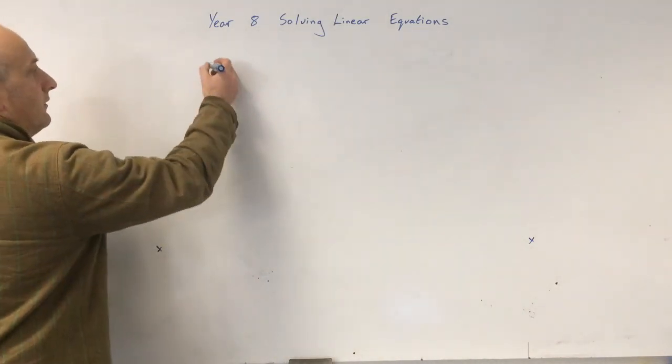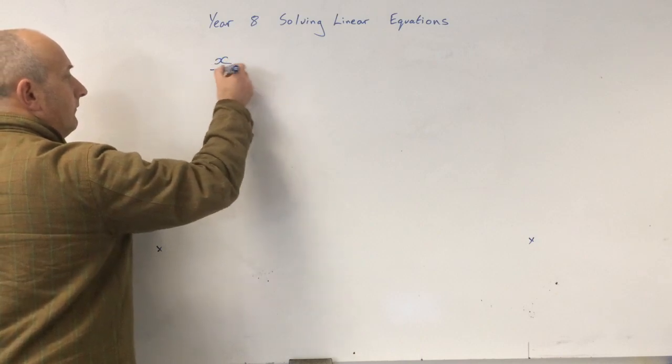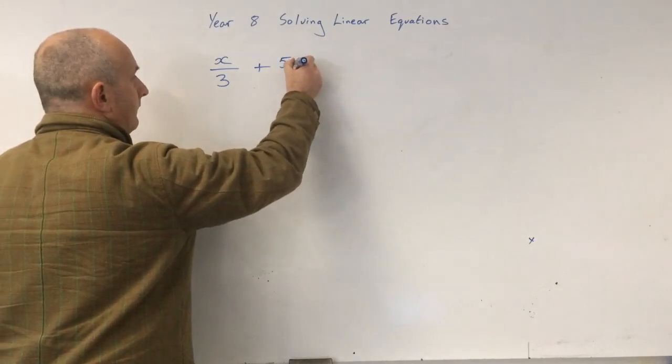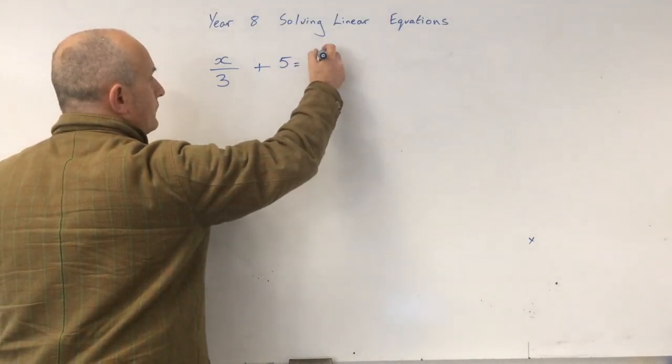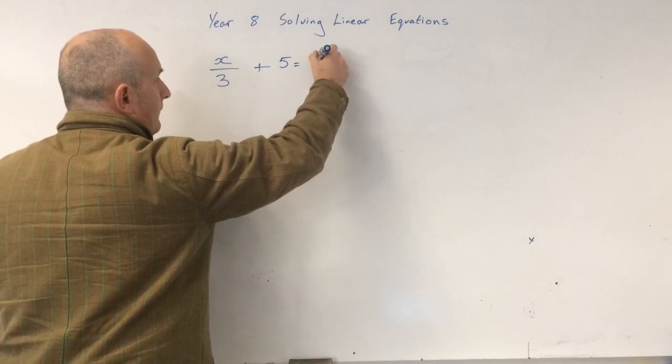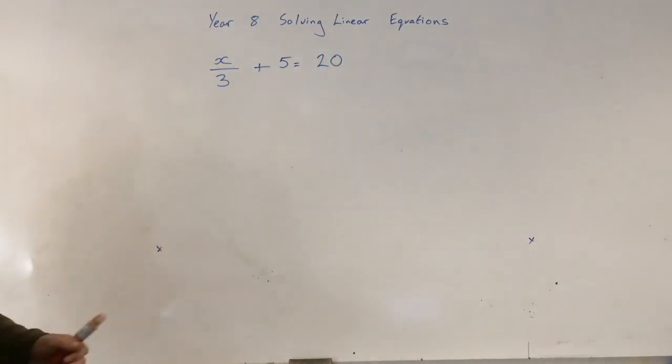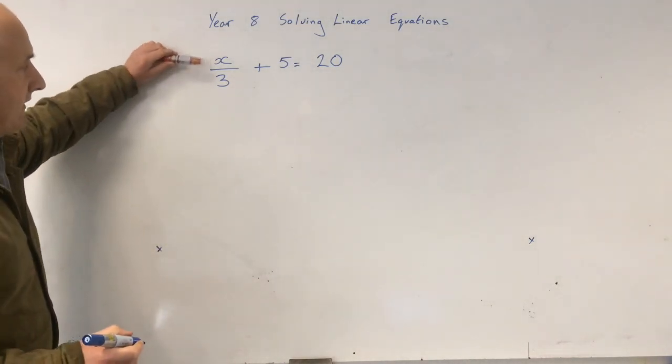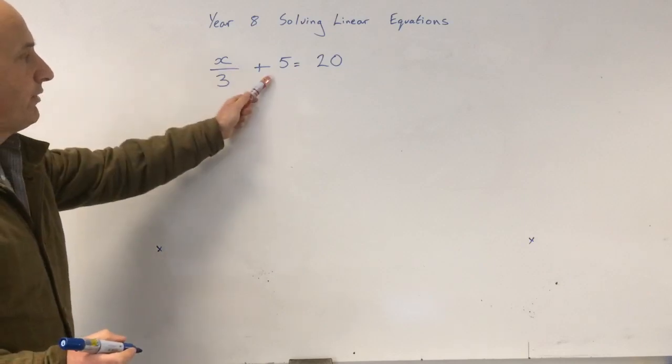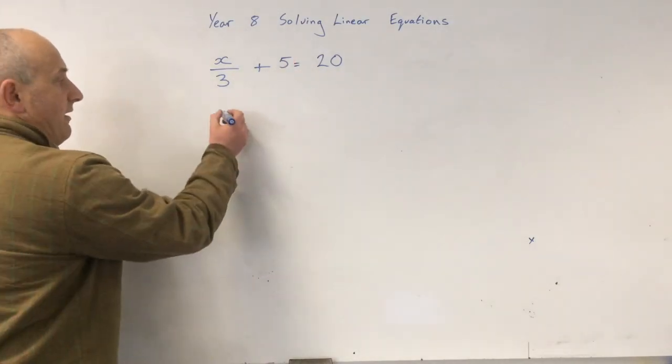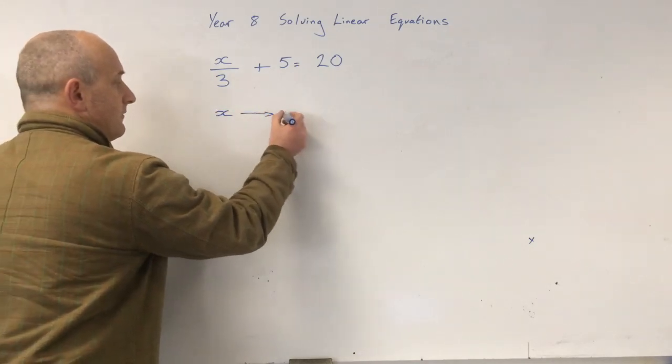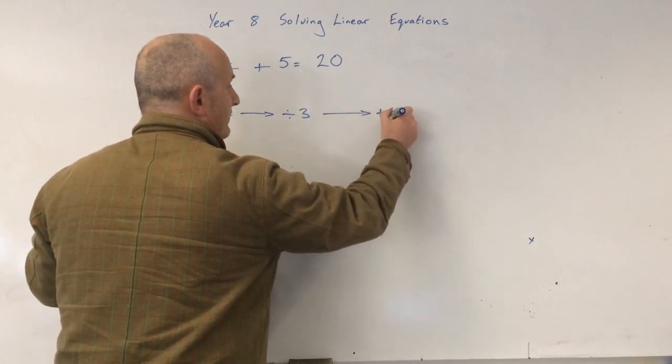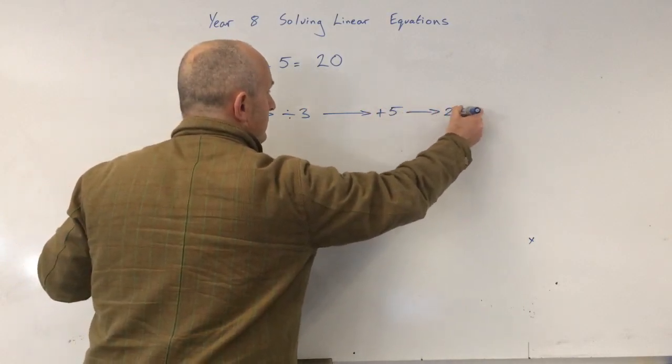What about this? Okay, so let's do this. So what's this saying? x divided by 3 plus 5 equals 20. Let's write this out. x divided by 3 plus 5 is 20.